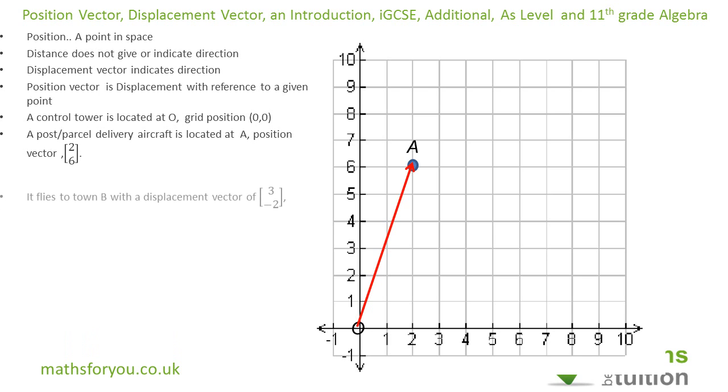Next, the aircraft flies from A to B with a displacement vector. Note it's displacement vector, not position vector because it's not referenced from the origin. Right. So the displacement vector is 3 minus 2. So you go 3 to the right and 2 down. That gives us, get us B and that's B there.